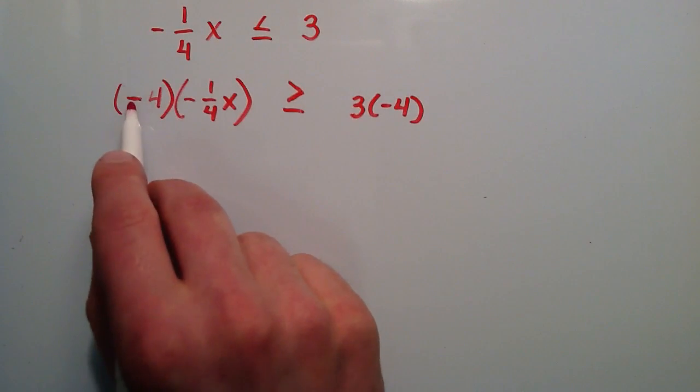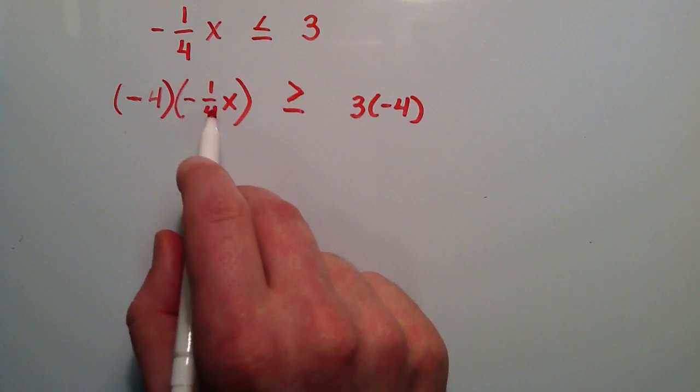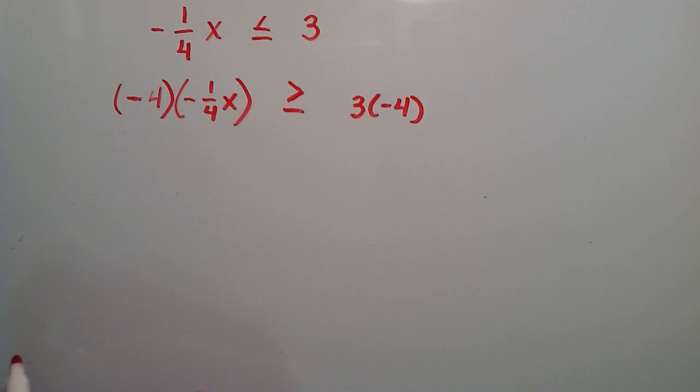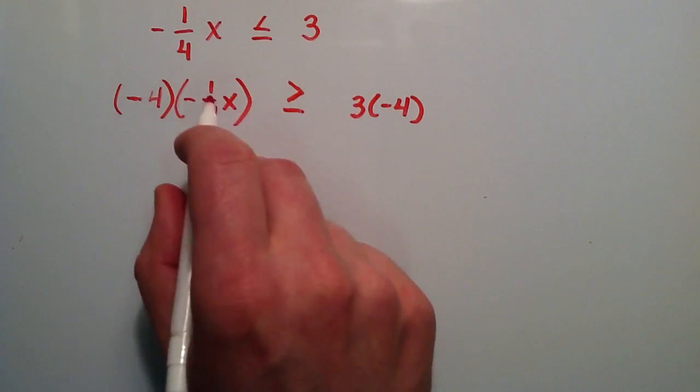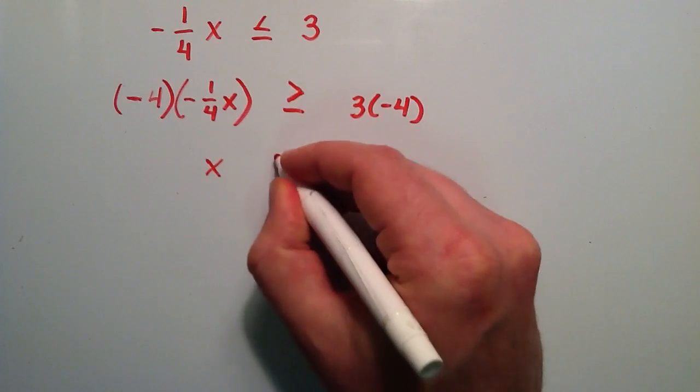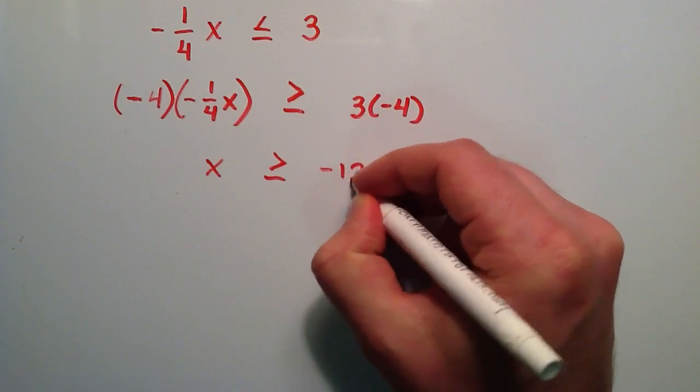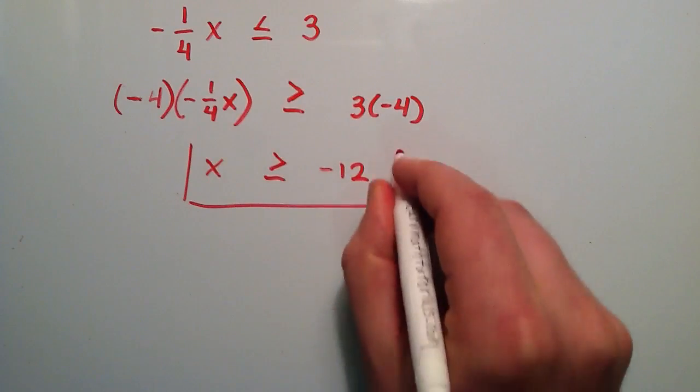So the left hand side we have a negative and a negative which gives us a positive. 4 times 1 over 4 is the same thing as 4 over 4 or 4 divided by 4 which is 1. So this all reduces to the number 1. 1 times x is simply x. And that's greater than or equal to 3 times a negative 4 which is negative 12. And that is our solution.